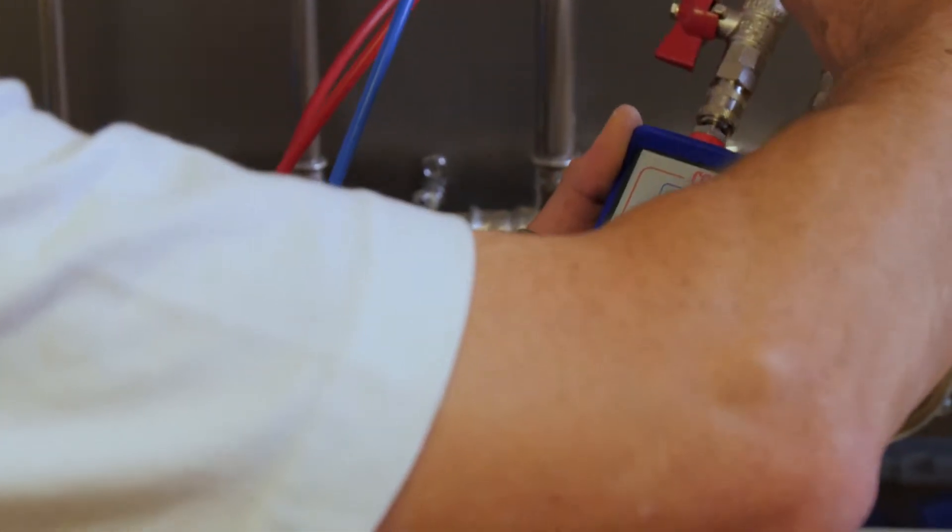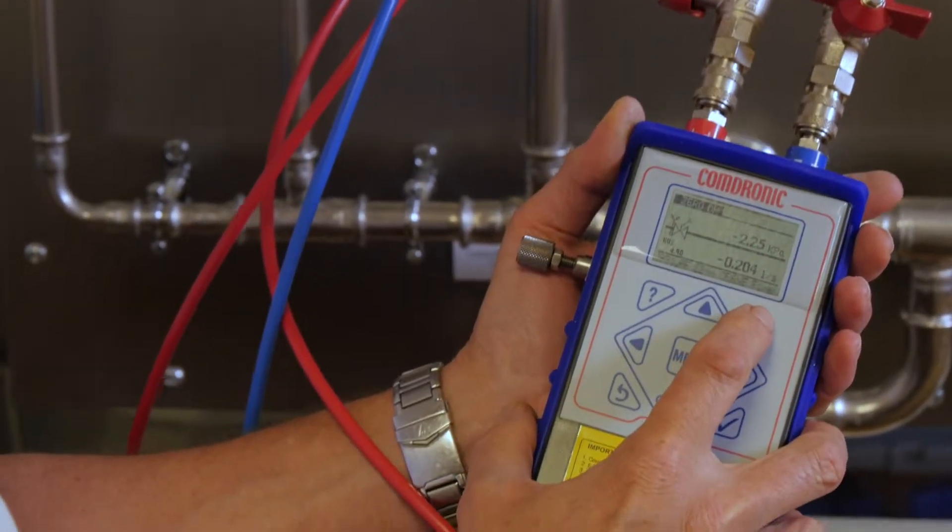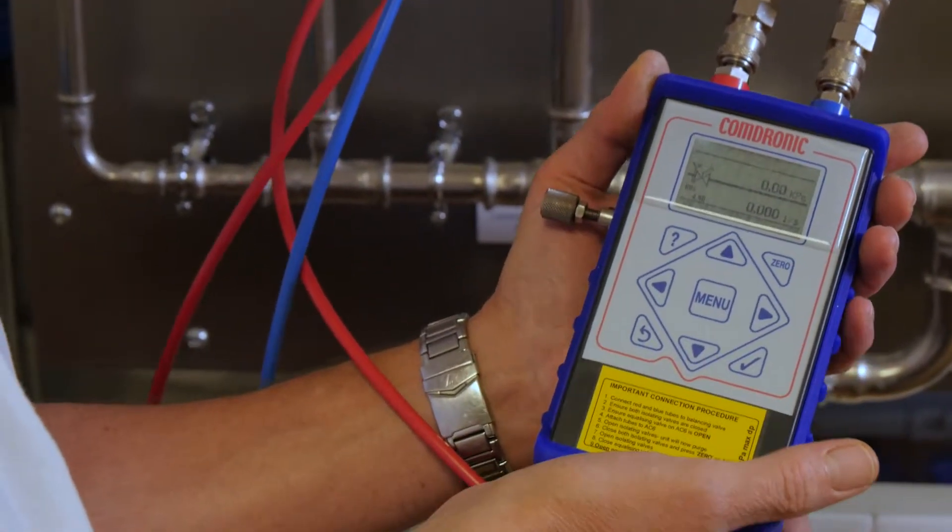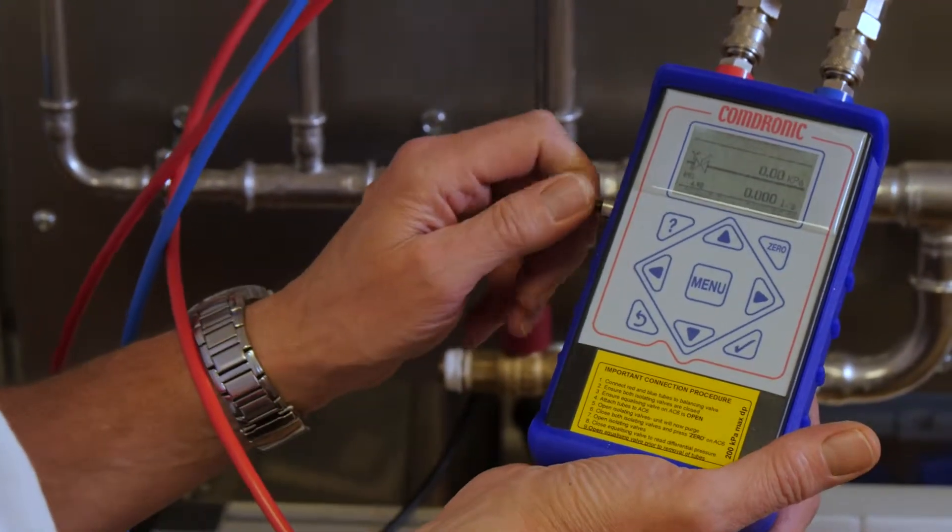We're then going to close those valves again. And press the zero button on the unit. So the sensor is now at zero waiting to take a flow measurement reading or a differential pressure reading.